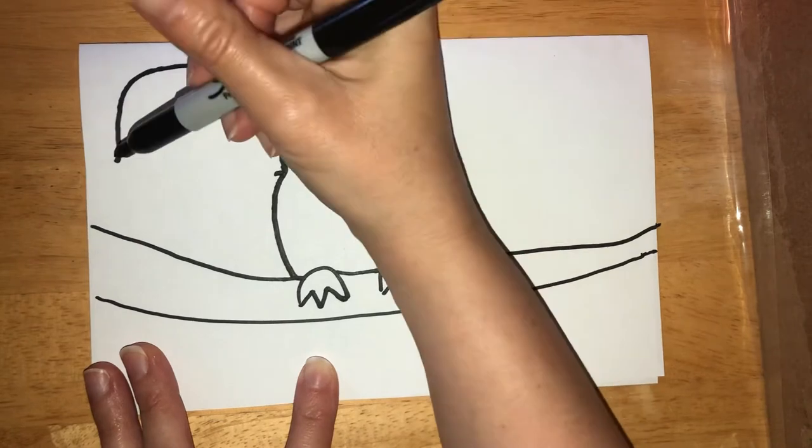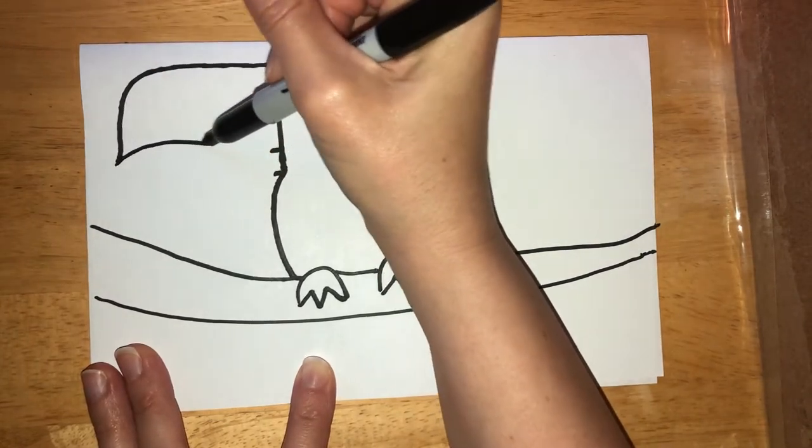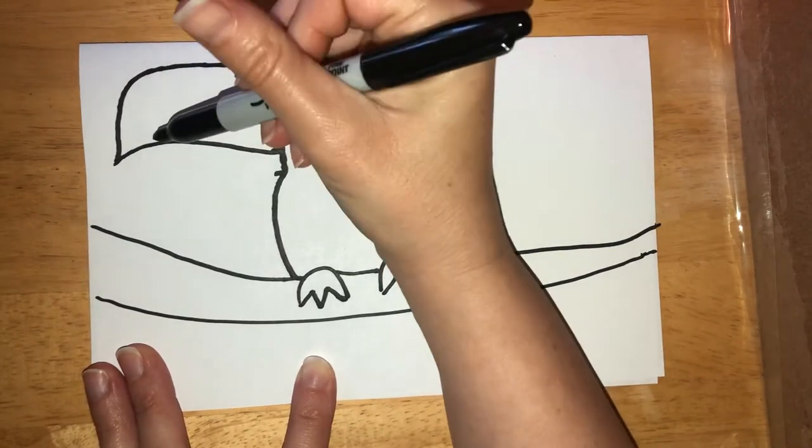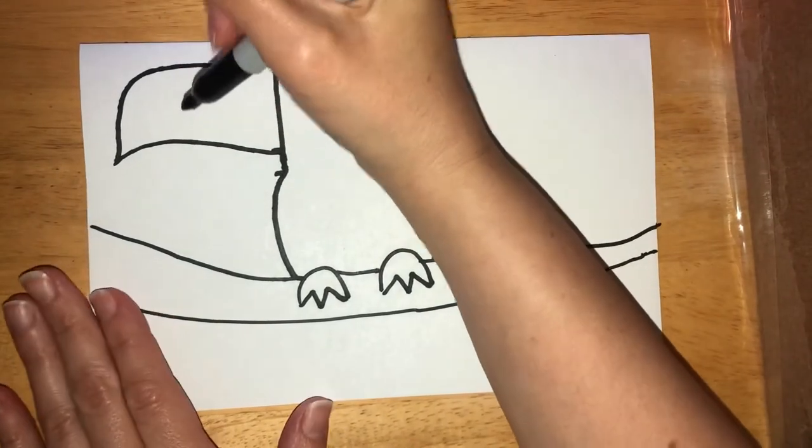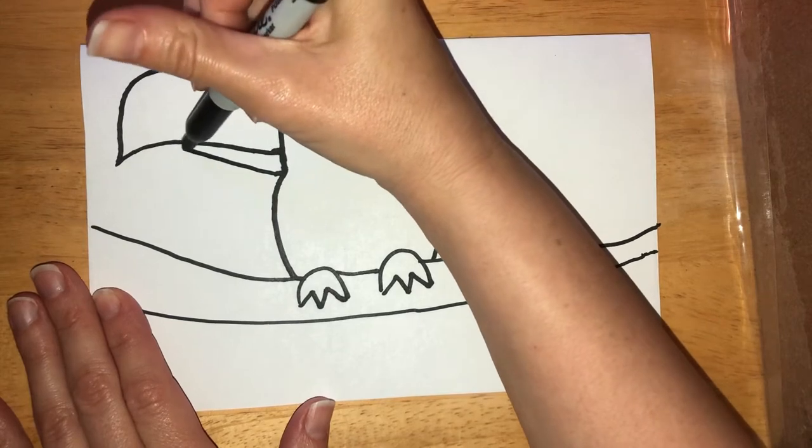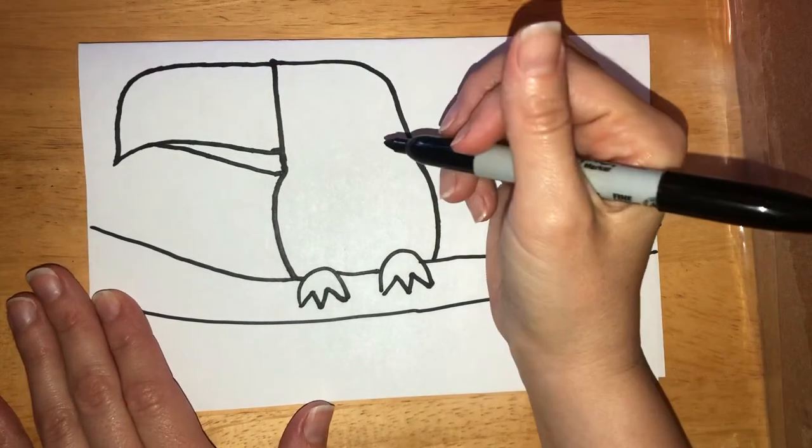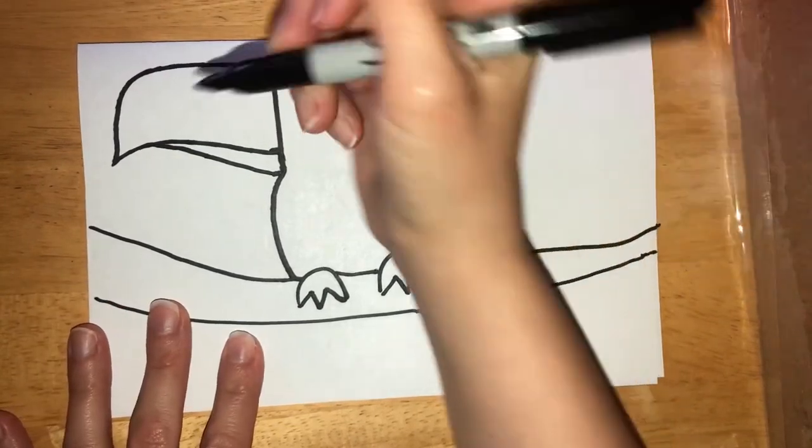But this part is going to connect with a curve here. Notice how I made it kind of pointy at the end, because that's how a toucan's beak should be with that point. This part here, we're going to come up and stop a little bit higher for the bottom of the beak.